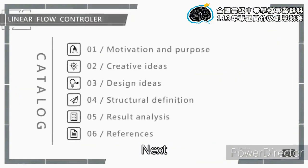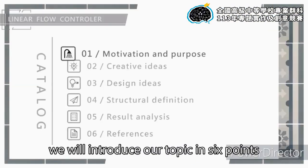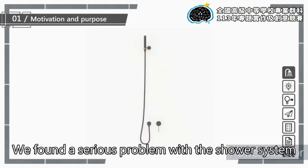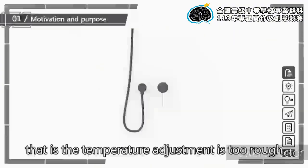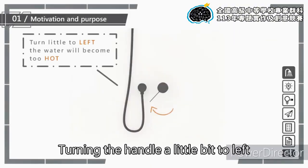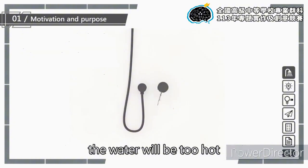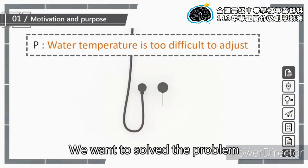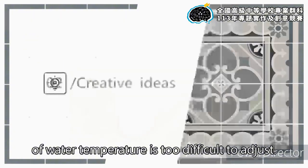Our topic is linear flow controller. We will introduce it in six points. First, motivation and purpose. Have you ever taken a shower? We found a serious problem with the shower system: temperature adjustment is too rough. Turning the handle a little bit to the left, the water will be too hot. A little bit to the right will be too cold. We want to solve the problem of water temperature being too difficult to adjust.